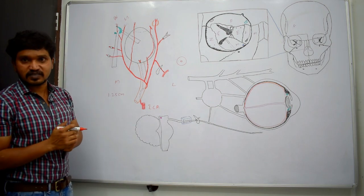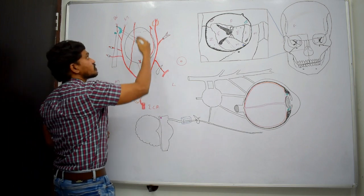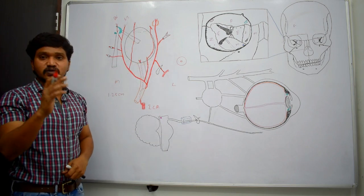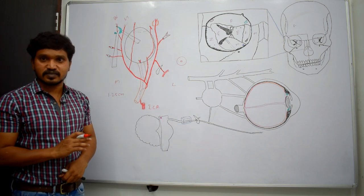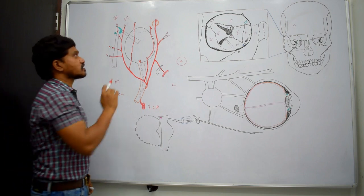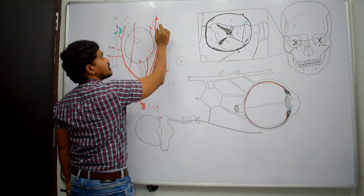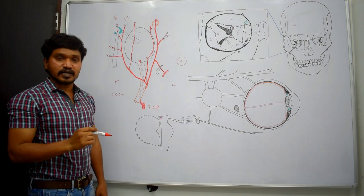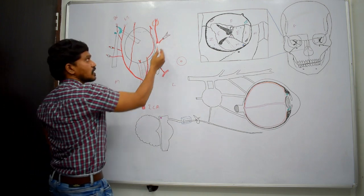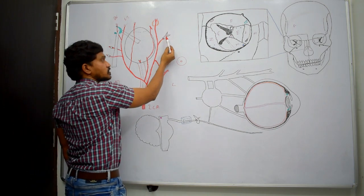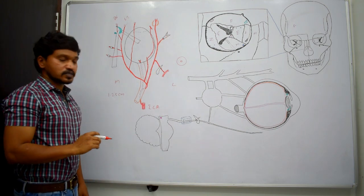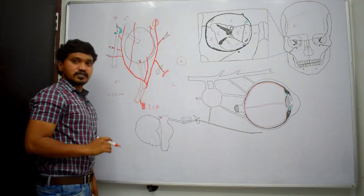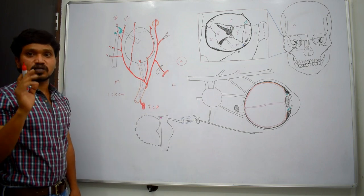Additional branches include muscular branches, which supply the muscles. To recollect: the branches of the lacrimal artery are the branch to the lacrimal gland, lateral palpebral branches, zygomaticofacial and zygomaticotemporal arteries, the recurrent meningeal branch, and muscular branches.